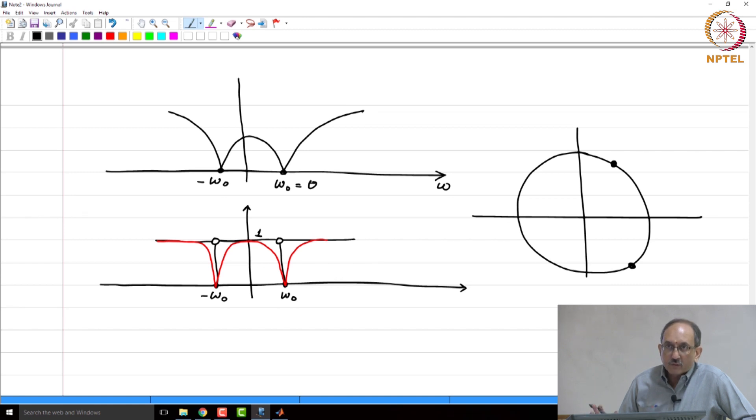It cannot be outside because then if you are considering causality that would not work. So, it has to be inside and then, same theta and at what radius. So, let us come visit that question. So, you want to place a pole at exactly the same angle and close to the 0.